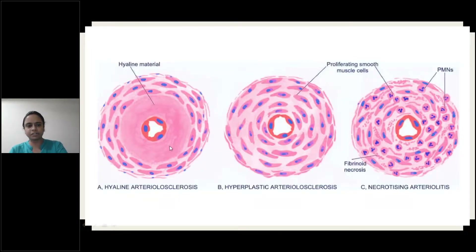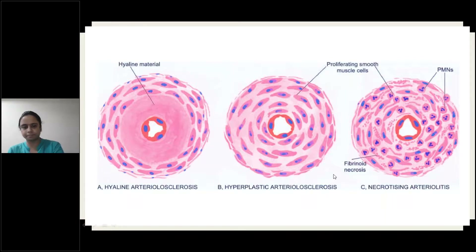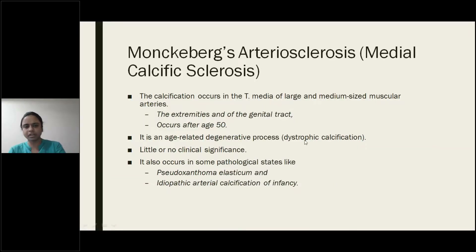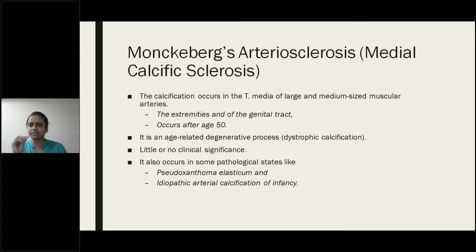Hyaline arteriosclerosis — hyaline material is deposited. Hyperplastic arteriosclerosis — proliferation of smooth muscle bundles. Necrotizing arteriosclerosis — there will be necrosis. Monckeberg's, as we already discussed: on X-ray you will see pipe-stem rigid tubes. On palpation you are going to feel hard vessels.